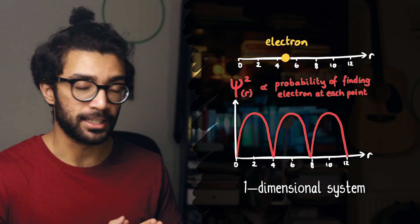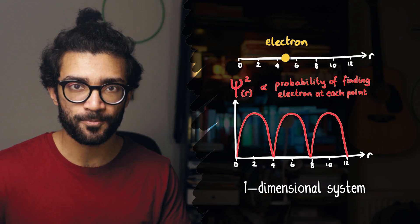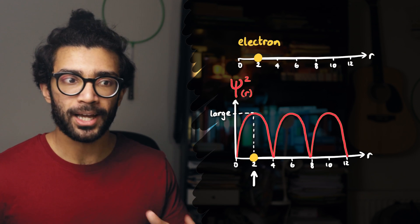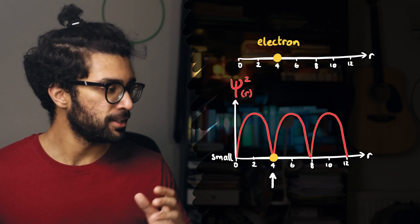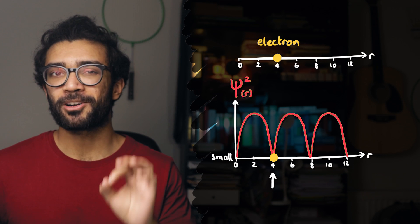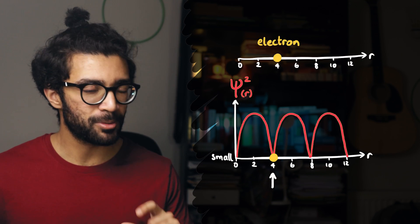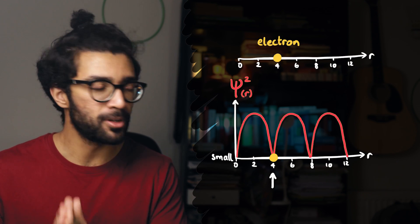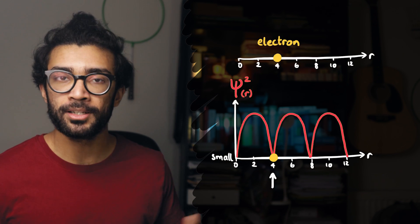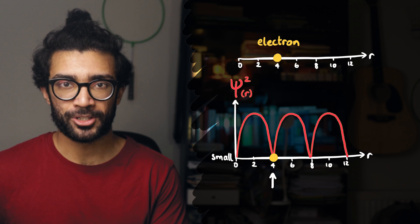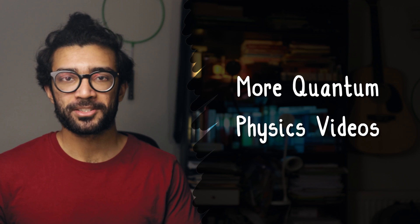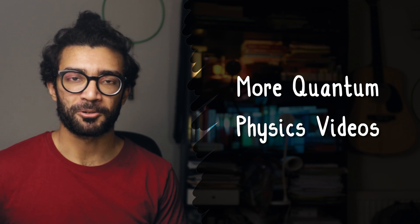Specifically, psi squared is telling us that at this position here, because psi squared is large, we're more likely to find our electron. Whereas at this position here, psi squared is small, and so we're less likely to find our electron. There are more subtleties to this that I'm not going to go into. For our purposes, all we care about is that this psi squared function tells us the probability distribution of our electron. I've talked about this in more detail in other quantum physics videos, so do check those out if you're interested.